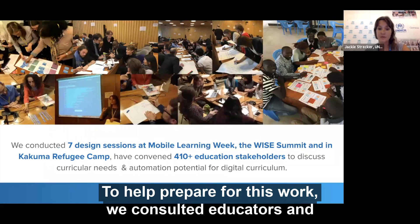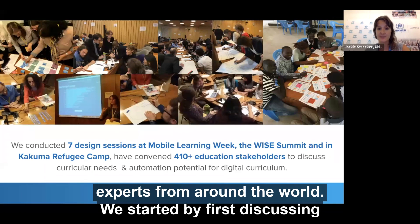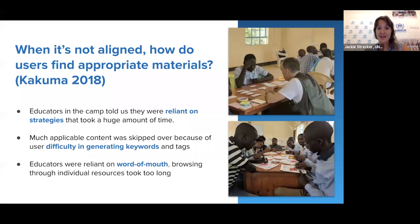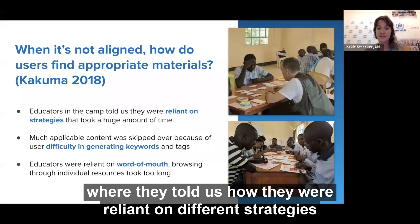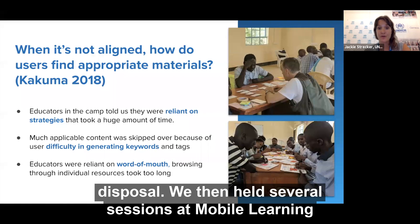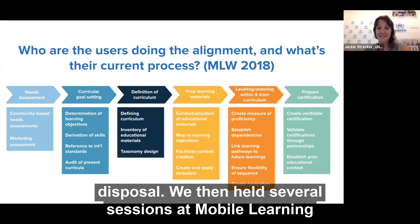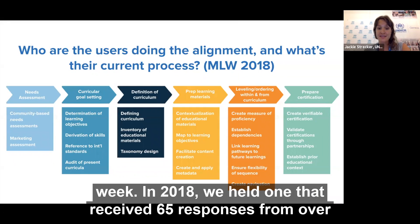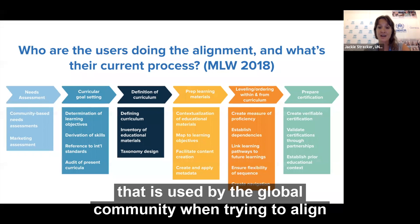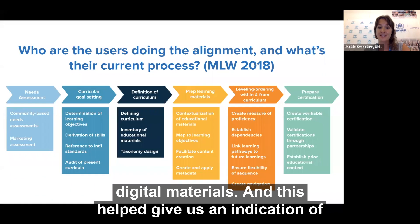To help prepare for this work, we consulted educators and experts from around the world. We started by discussing with educators based out of the Kakuma refugee camp in Kenya, where they told us how they were reliant on different strategies to sort through the variety of content at their disposal. We then held several sessions at Mobile Learning Week. In 2018, we held one that received 65 responses from over 80 participants, who helped us narrow down to 21 general steps used by the global community when trying to align digital materials.